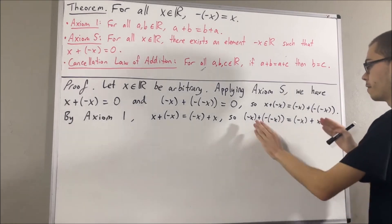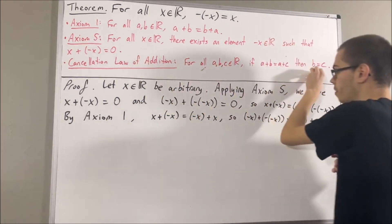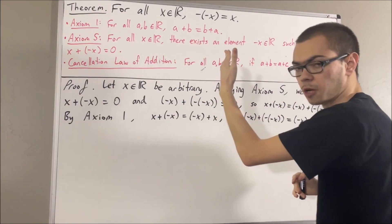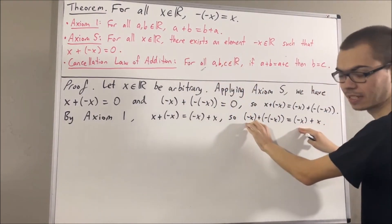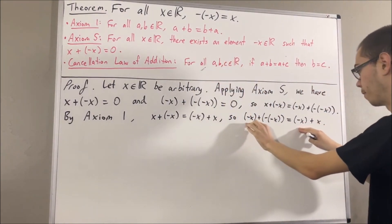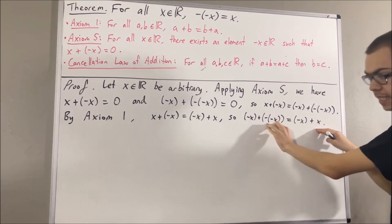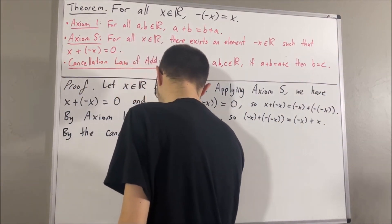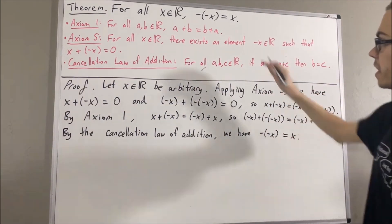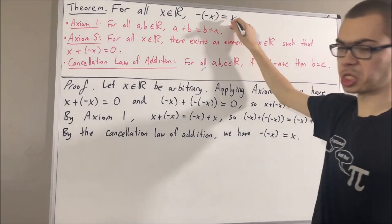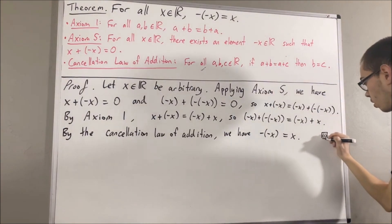And from here, we can apply the cancellation law of addition. Applying the cancellation law of addition, we can cancel out the negative x's, and so we're left with the negative of negative x equals x. And that is exactly what we wanted to show, so this completes the proof.